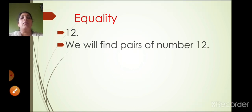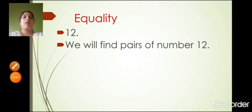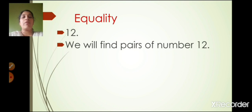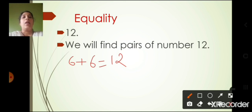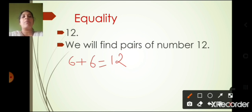Now suppose we take the number 12. We have to find pairs of numbers that give 12. For example, 6 plus 6 is equal to 12 — that is one pair. You can make many such pairs: 7 plus 5 is also 12, 8 plus 4 is also 12. You can take any two numbers, but the answer should be 12.